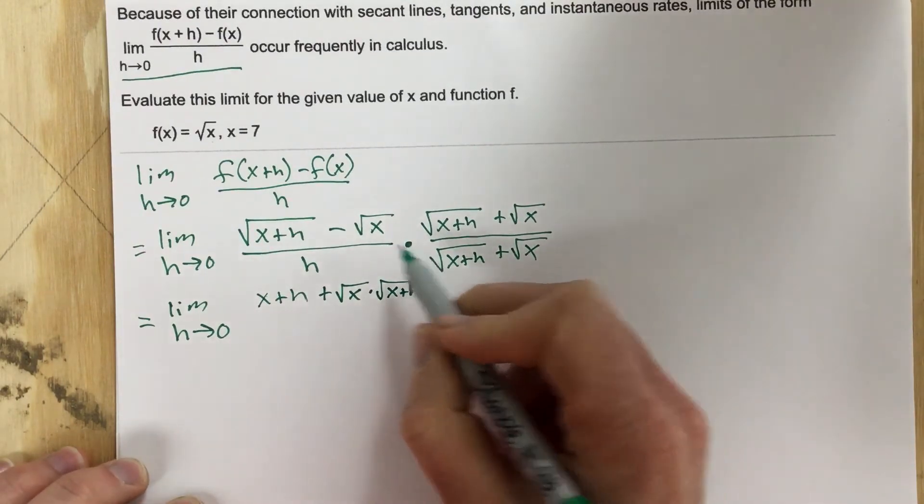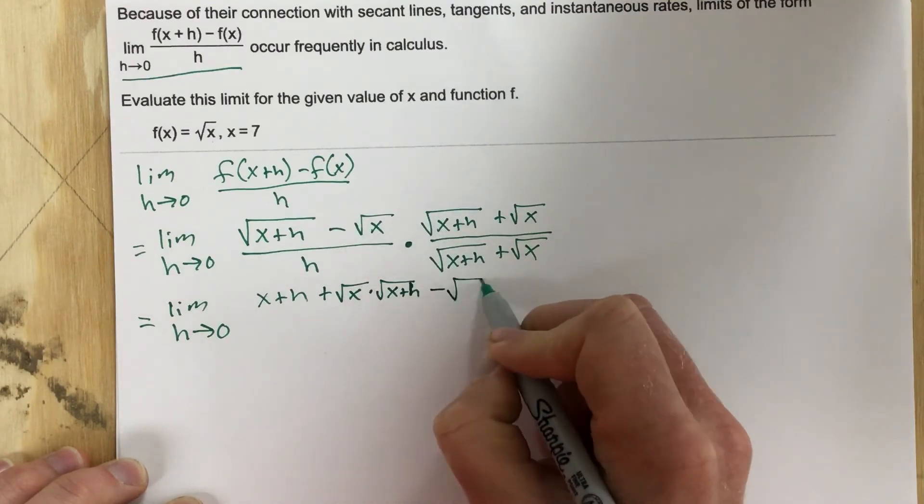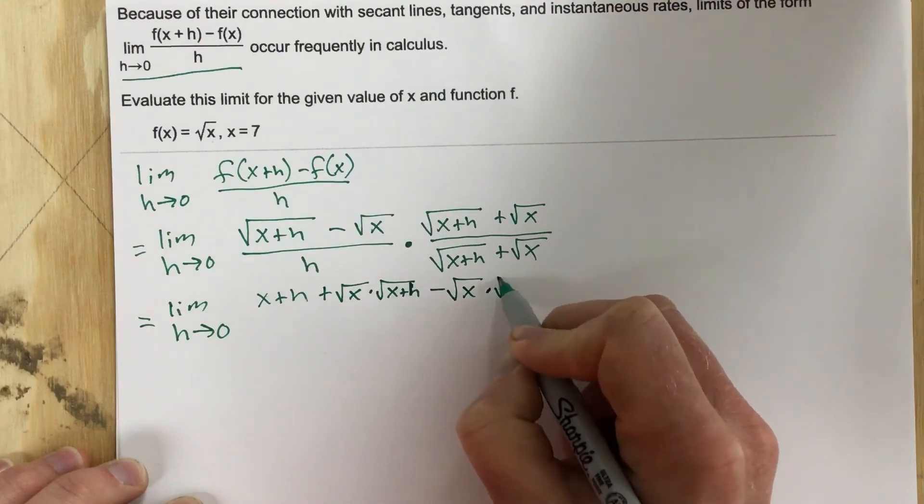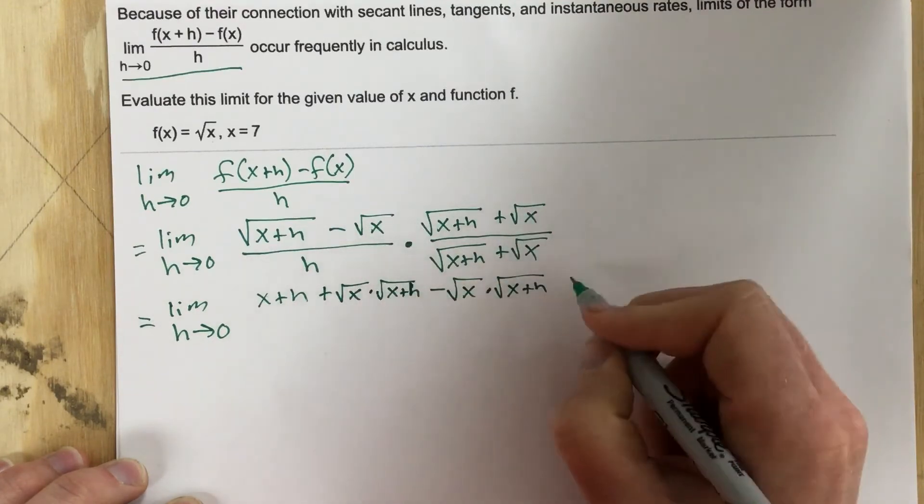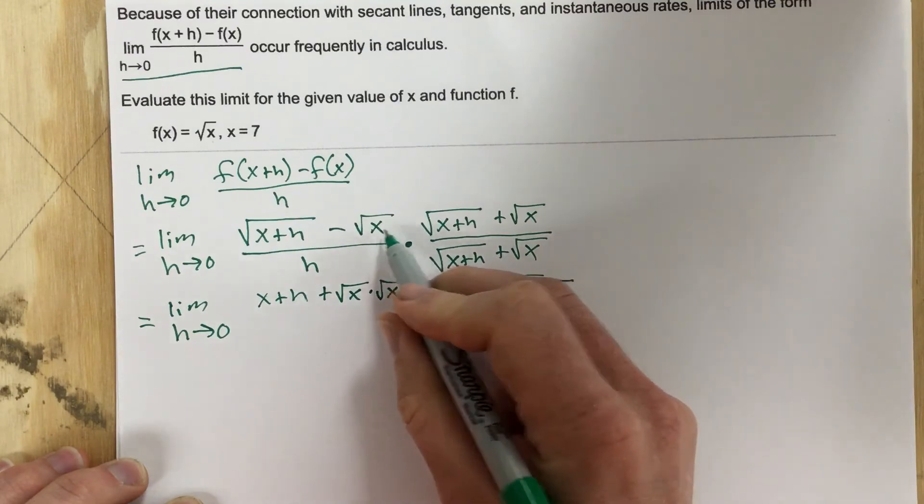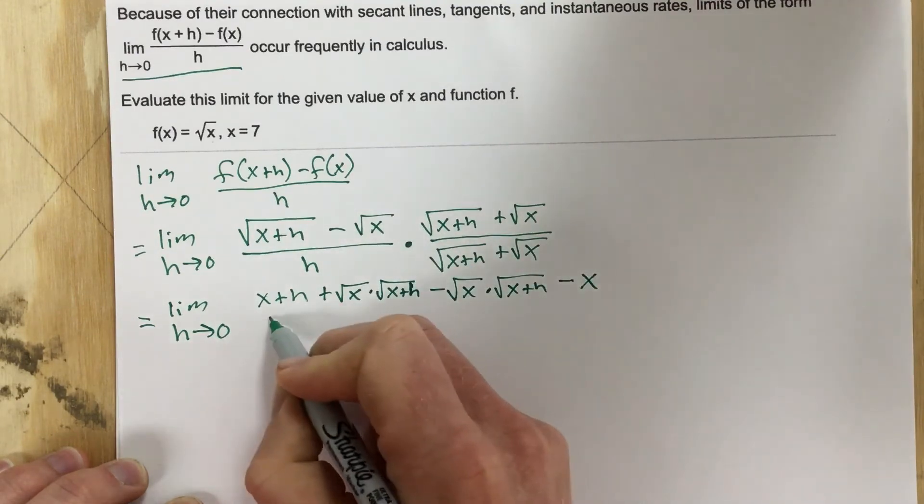And then when I multiply negative root x times this, I get negative root x times root x plus h. And then I take negative root x times root x, and I get negative... Well, the roots cancel. I'm left with just x. And that's all over...